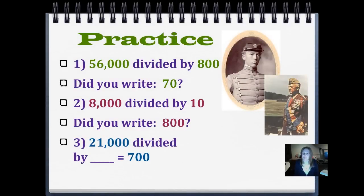21,000 divided by something equals 700. Hmm, that's a little tricky. Write that out so you can figure out that one. Then push play when you're ready.